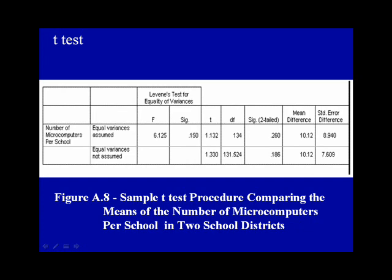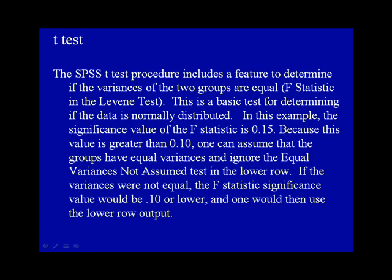The SPSS t-test procedure includes a feature to determine if the variances of the two groups are equal. This is called the F-statistic in the Levene test. This is a basic test for determining if the data is normally distributed. In this example, the significance value of the F-statistic is 0.15.